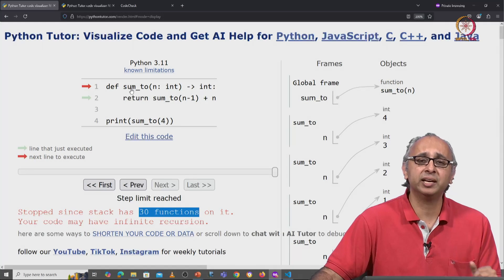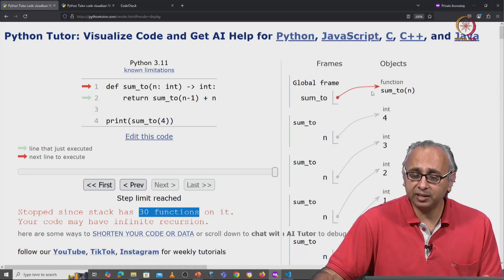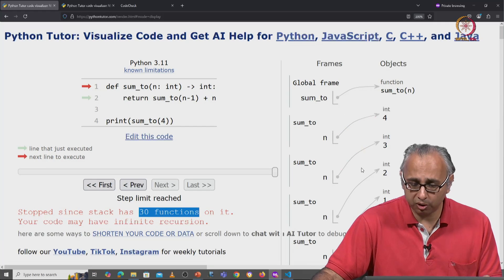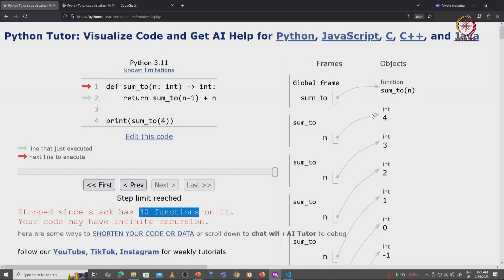Of course it's calling itself and here I see those calls all the way down here. But look, it looks suspicious. Here I'm calling sum_to with the argument 4. Here I'm calling sum_to with the argument 3, 2, 1, 0,